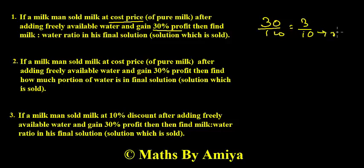And our question is find the milk to water ratio, means milk is nothing but 10 and water is 3. So our answer is 10 to 3. Whenever we have to find the milk to water ratio, after selling at cost price, it means the profit ratio says everything. 30% is nothing but 3 out of 10, 3 is water, milk is 10.